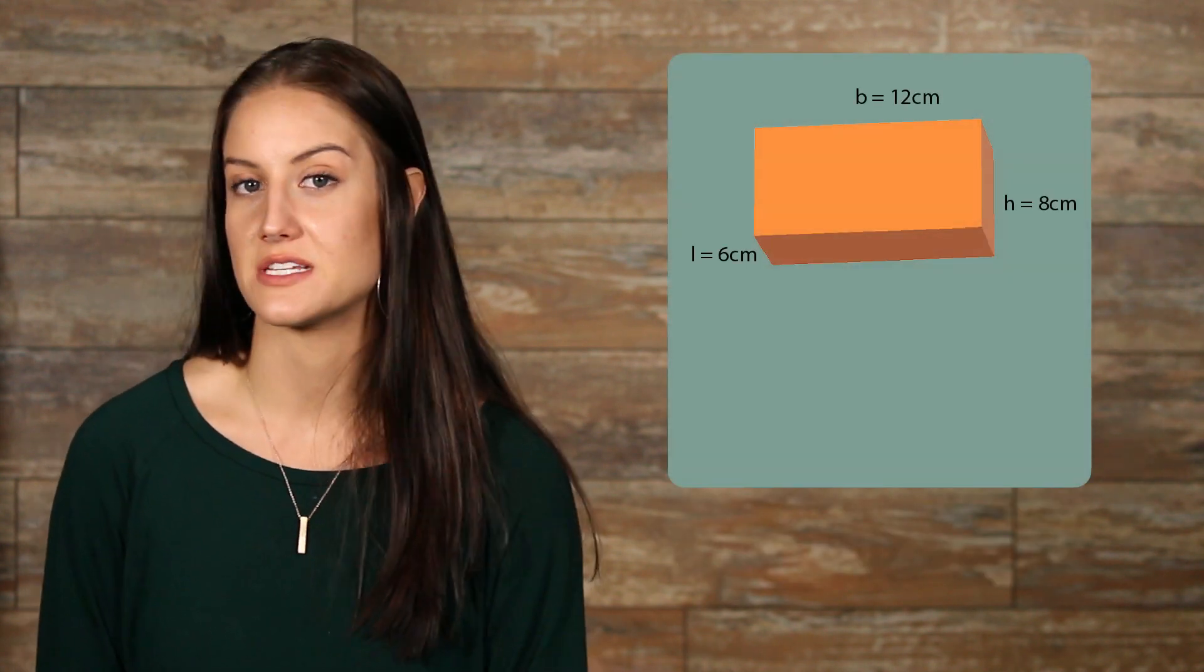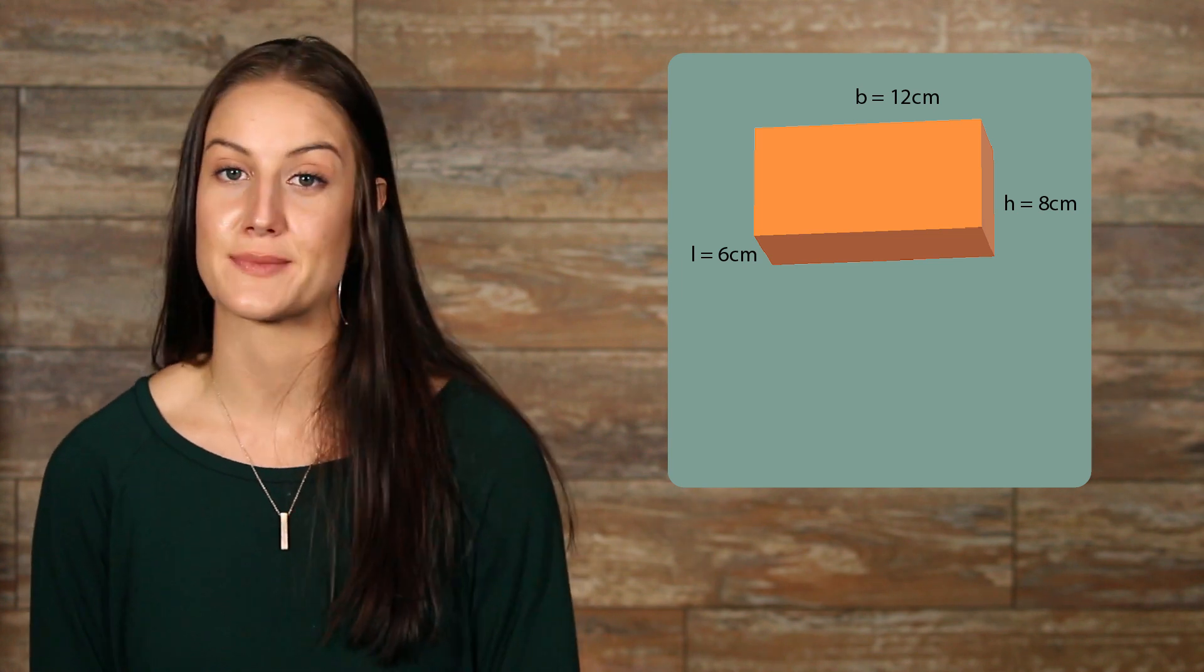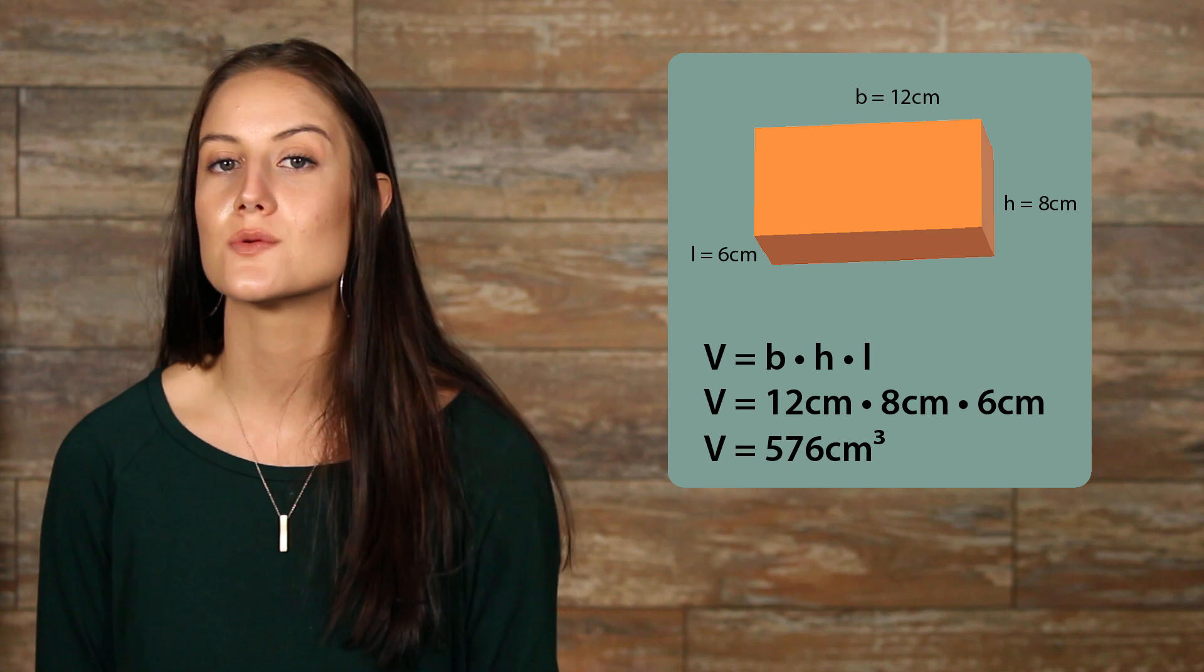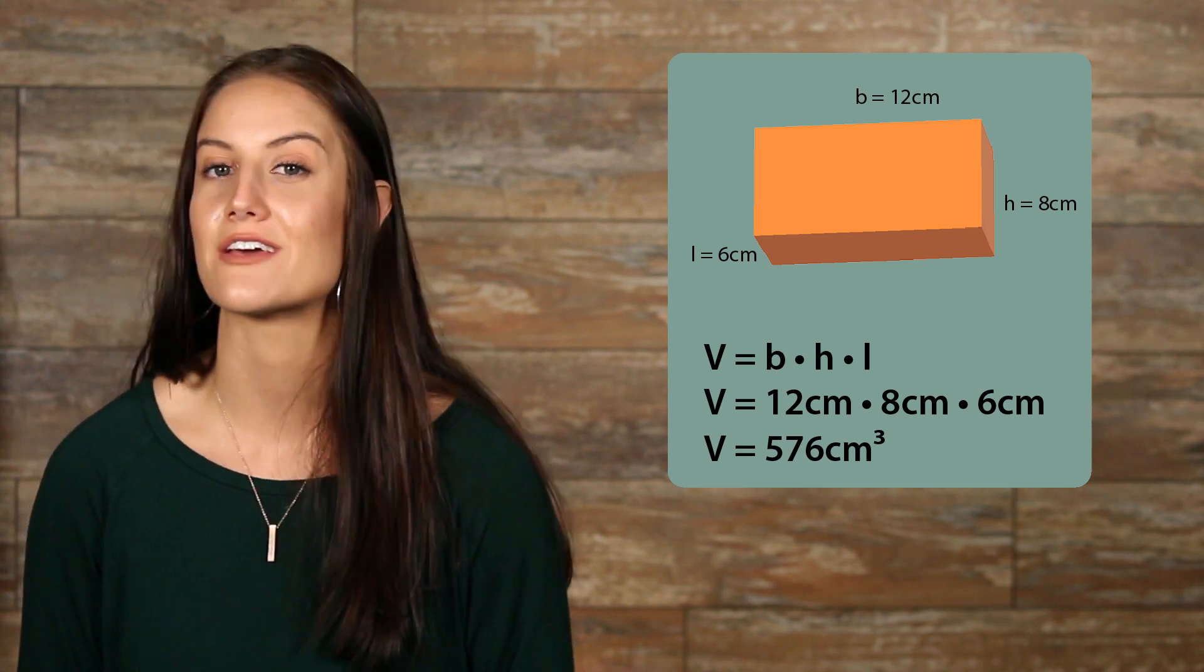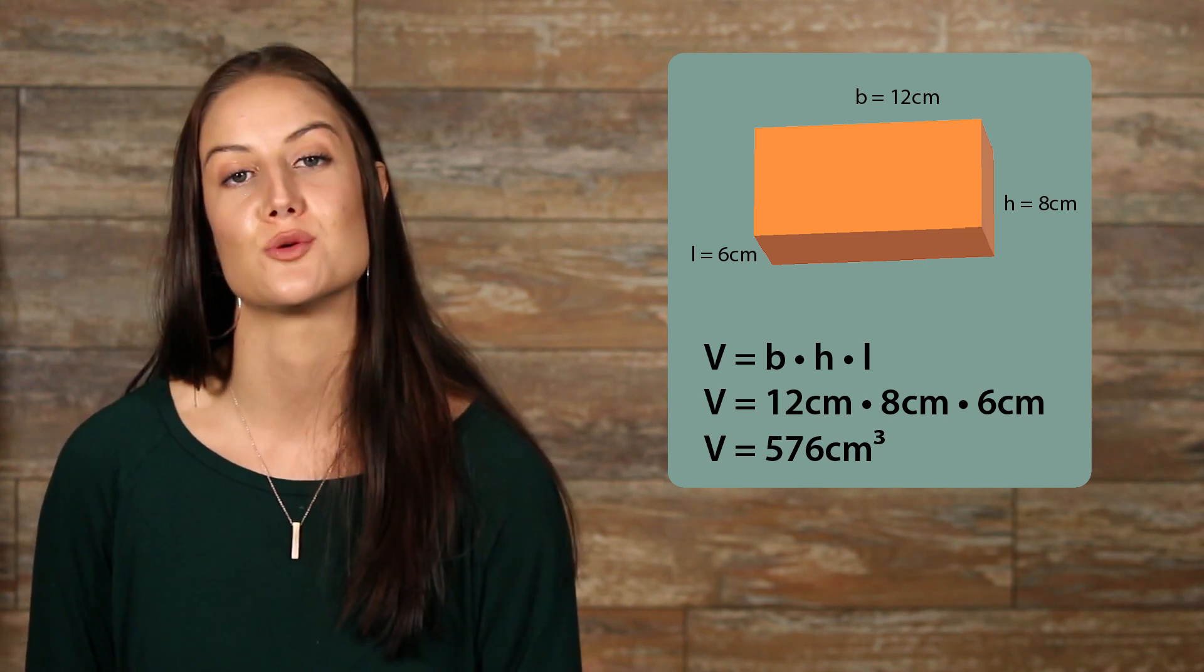Let's try another. Here we have a rectangular prism, with sides that are different in distance. We have a base of 12 cm, a height of 8 cm, and a length of 6 cm. Now all we need to do is plug those numbers into our formula, and once we solve, we get 576 cm cubed.